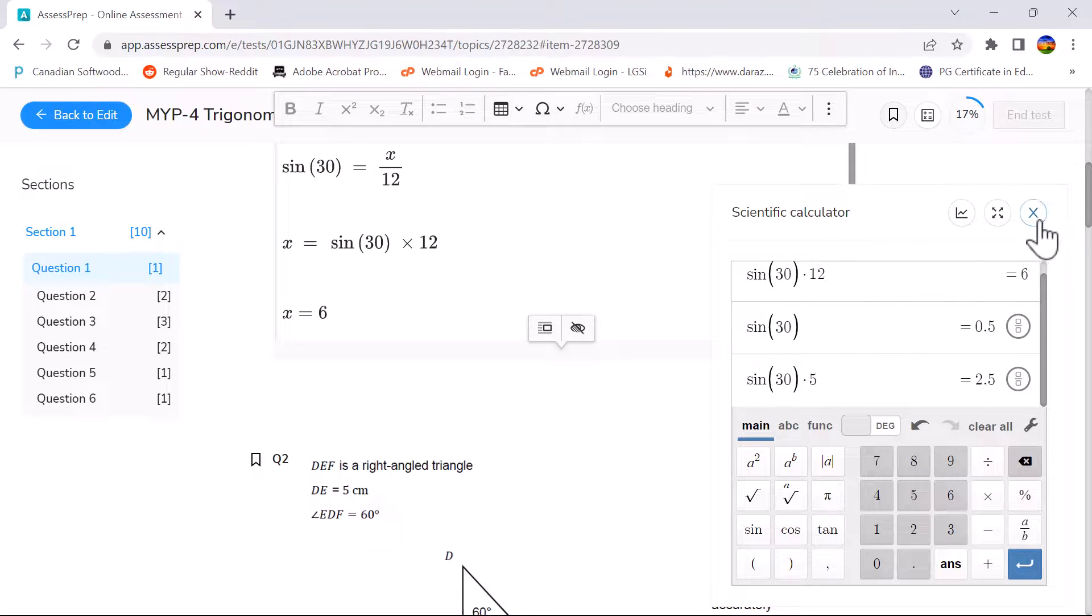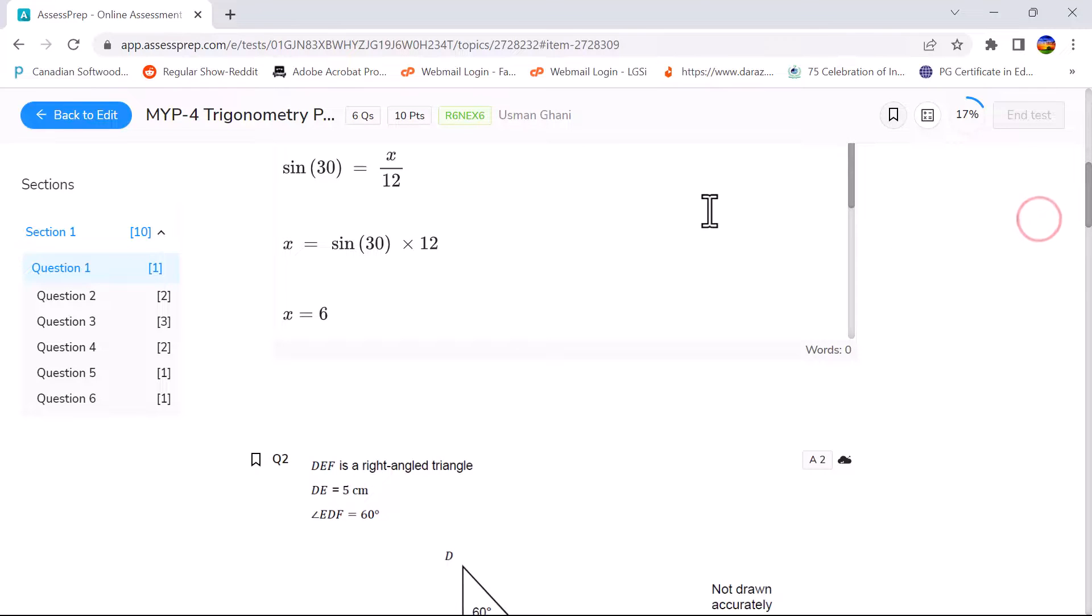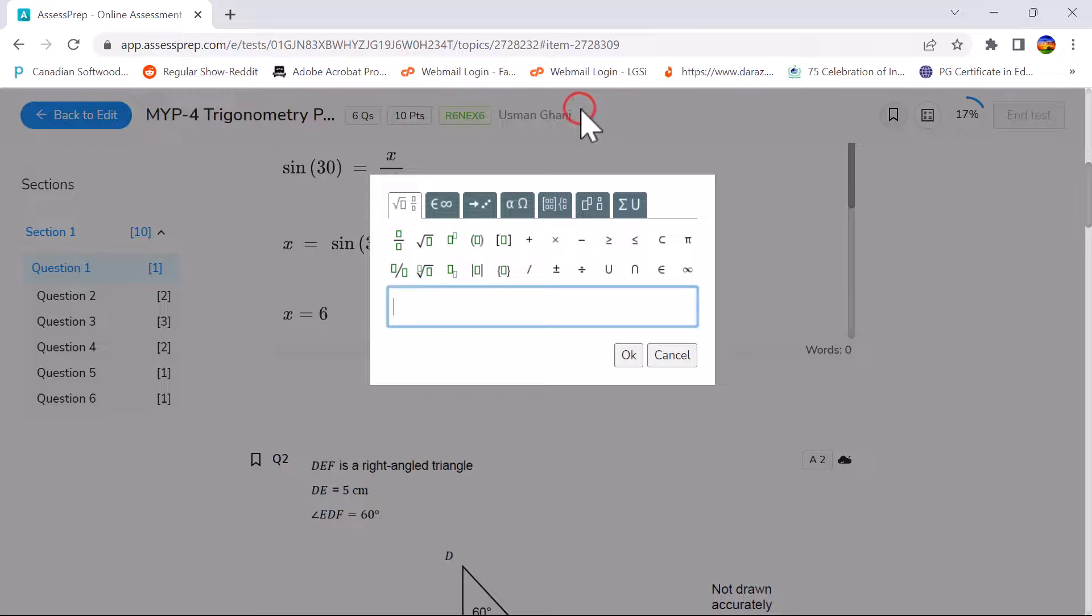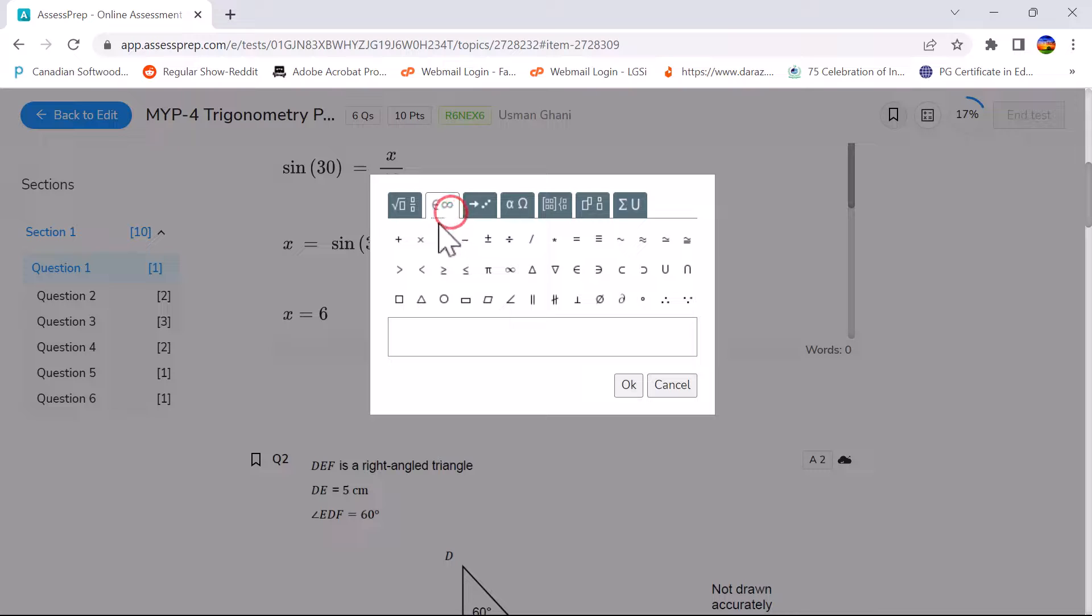If you want to close the calculator simply press the cross button. Also if you want to insert some special characters there are a lot of characters over here like the fraction, the square roots, the power, the brackets, plus minus multiply divide, intersection of sets, union of sets, the greater than sign, the less than sign, pi, infinity and also there are a lot of symbols over here for you to choose.